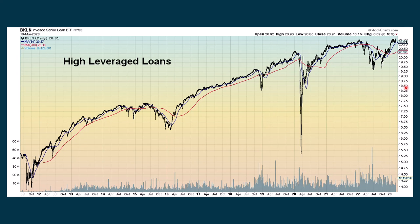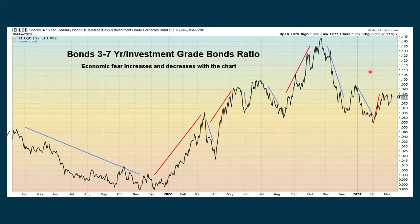Looking at high leverage loans — if the economy was getting ready to fall off a cliff, do you think these would be breaking out after giving us a recent golden cross? No, they probably would not. These are risky loans, and if they were in danger of default, these stocks making up this ETF would not be going up. So that's one thing that goes against the recessionary scenario the market is putting forth. Comparing shorter-term maturities with investment grade bonds — when this is going up, fear is increasing, so we use this like the VIX. When the blue line is going down, fear is decreasing. We've been chopping around quite a bit lately.